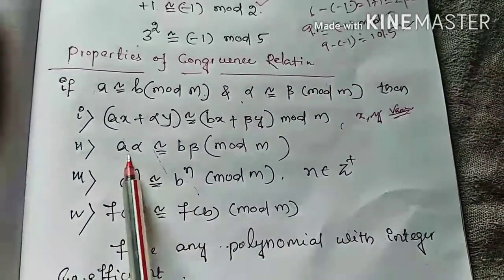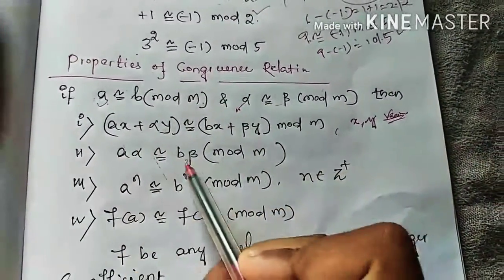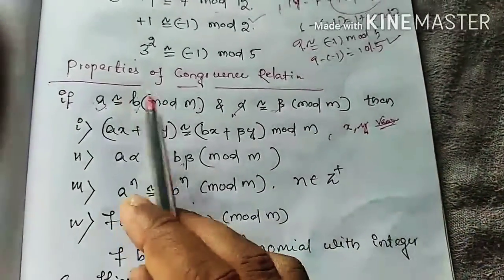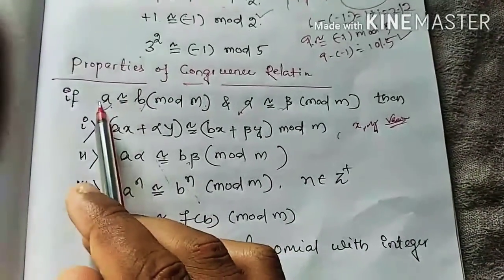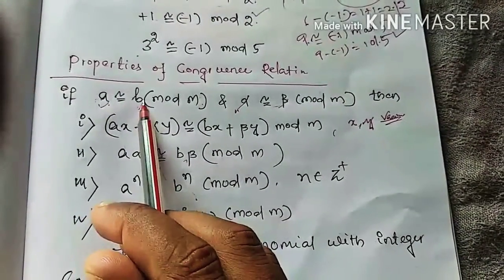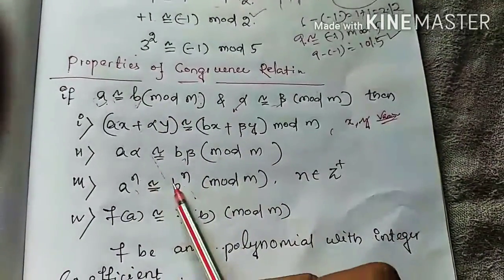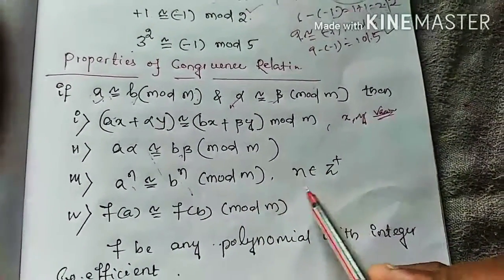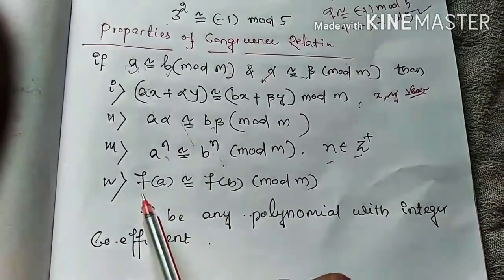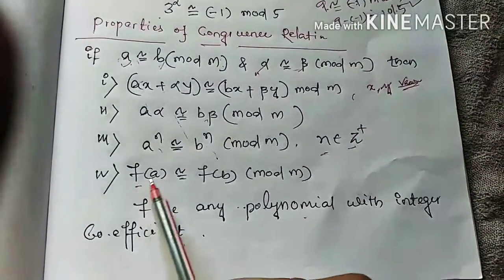The second property is that a times alpha is congruent to b times beta modulo m. Third, we can raise the power: if a is congruent to b modulo m, then a squared is congruent to b squared modulo m, a cubed is congruent to b cubed modulo m, and so on — a to the power n is congruent to b to the power n modulo m, where n is a positive integer. Fourth, if f is any polynomial with integer coefficients, then f(a) is congruent to f(b) modulo m.